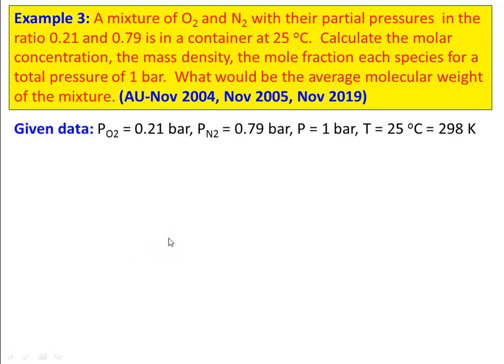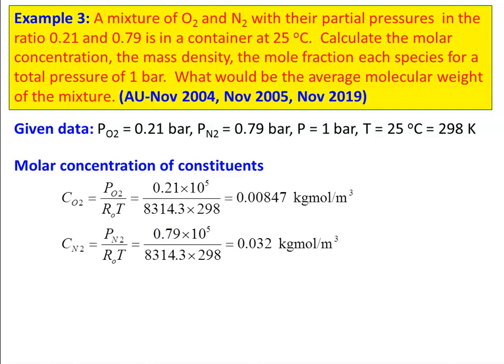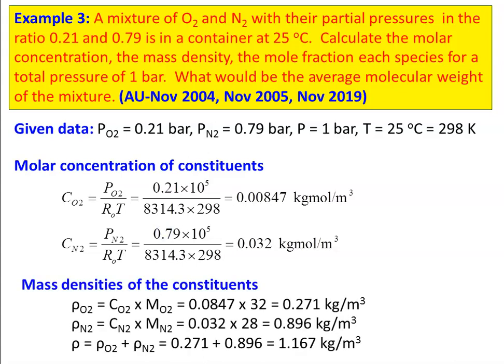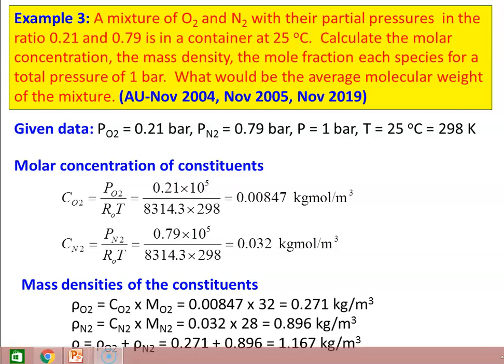Given data: partial pressure of O2 = 0.21 bar, partial pressure of N2 = 0.79 bar, total pressure = 1 bar, temperature = 25°C = 298 K. Molar concentration: CO2 = PO2/(R0×T) = 0.00847 kg·mol/m³. CN2 = PN2/(R0×T) = 0.032 kg·mol/m³. Mass density: ρO2 = CO2 × MO2 = 0.00847 × 32 = 0.271 kg/m³. ρN2 = CN2 × MN2 = 0.032 × 28 = 0.896 kg/m³. Total density = 0.271 + 0.896 = 1.167 kg/m³.